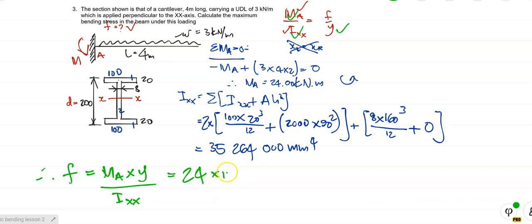24 times 10 to the power of 6 multiplied by Y. What's Y? Y is the distance from there to there, that's D over 2, is 100, over Ixx which is all of that which we just found, so it's 35,264,000. Check your answer to see that you get the same thing as I did. And we got, I should have got 68.06. It's a stress, so what is it? Newtons per millimeter squared.